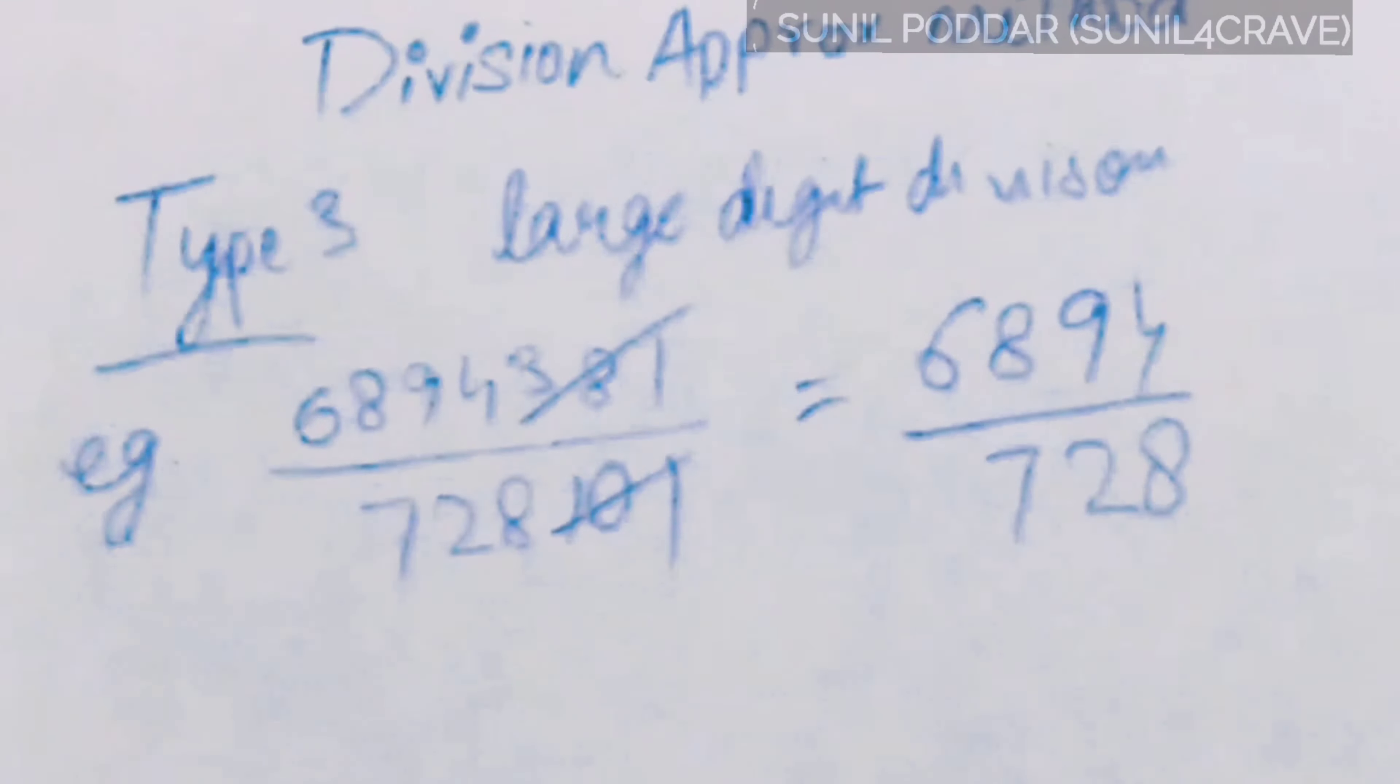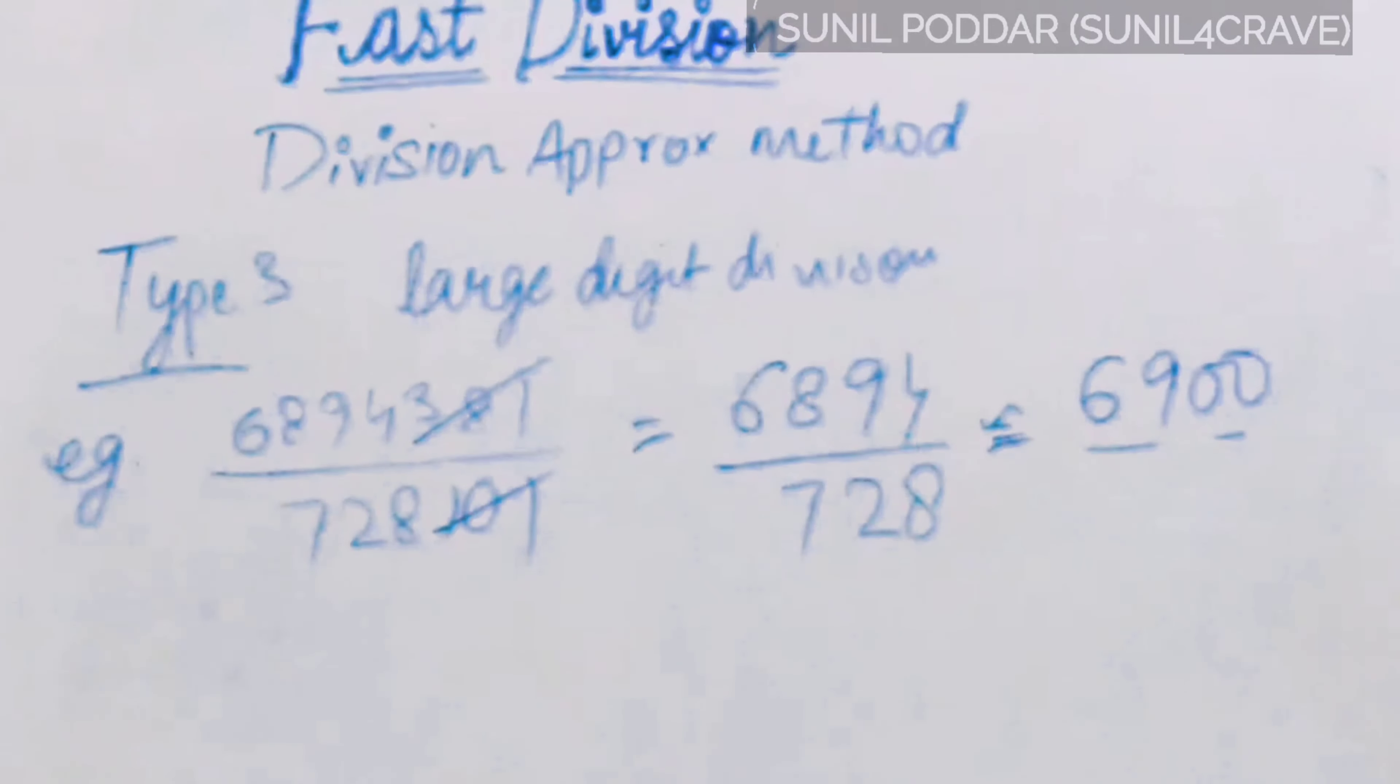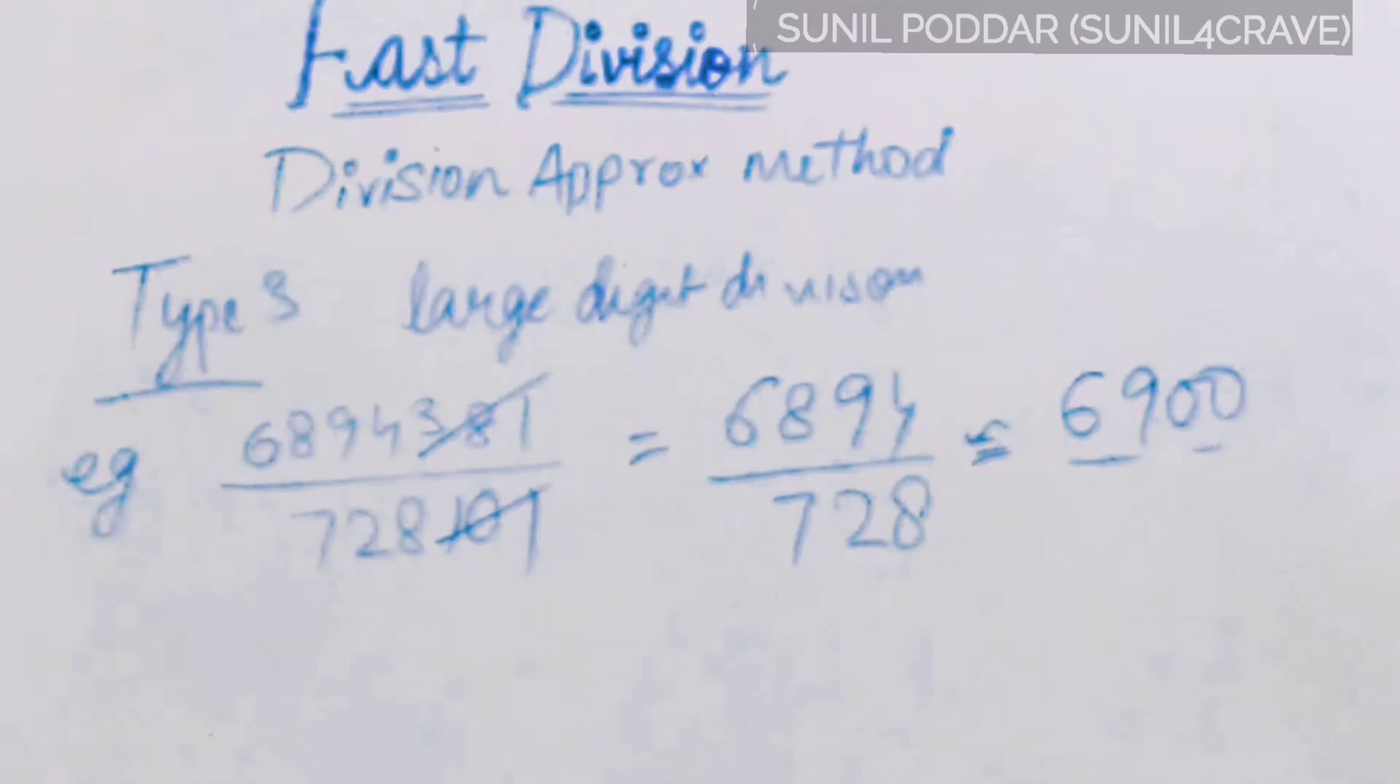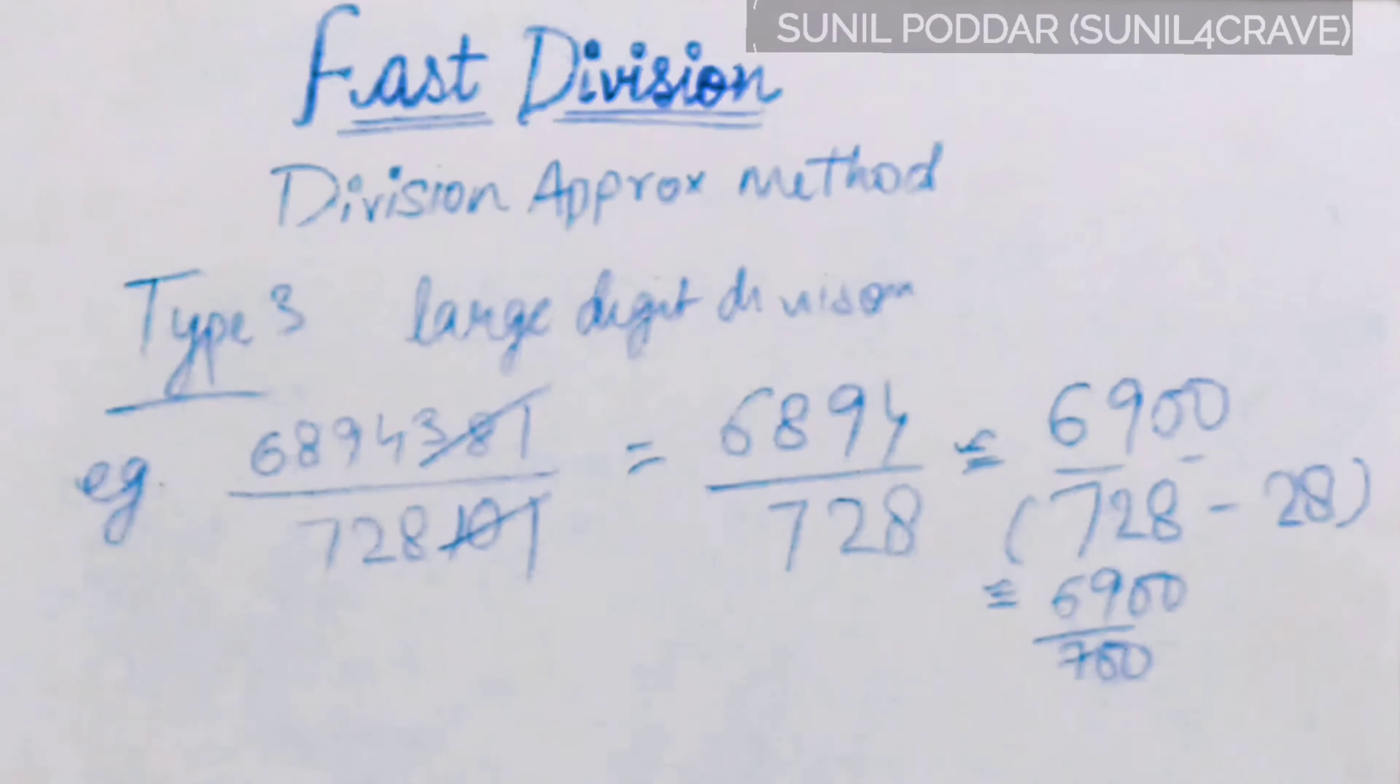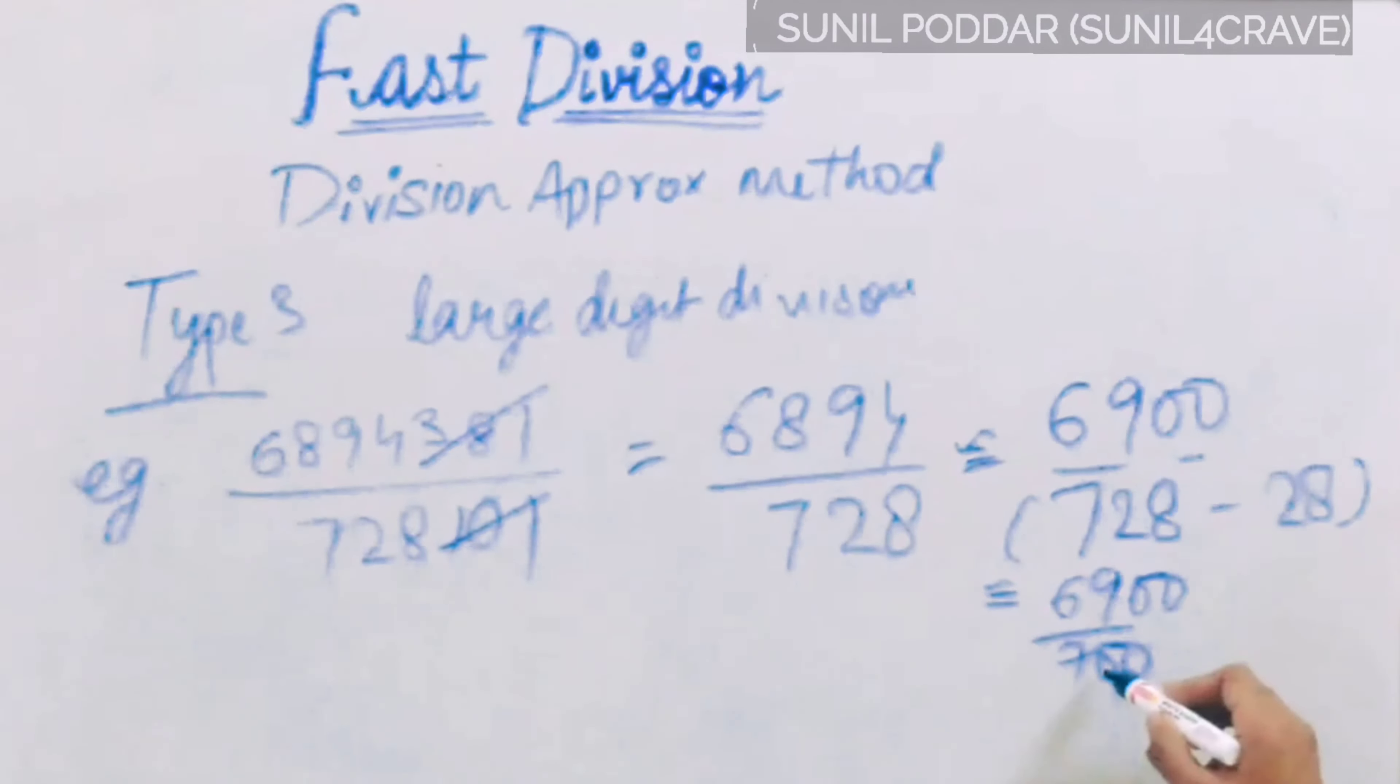We have to divide 6,894 with 728. Let's check. As we already did this in Type 2, the negative base is nearby to 6,900. And 728 in multiple of hundreds, it is nearby to 700. But to make it 700, we have to minus 28 from 728.